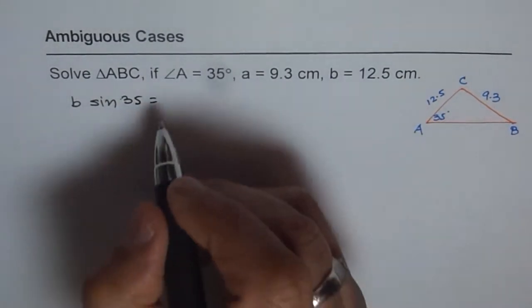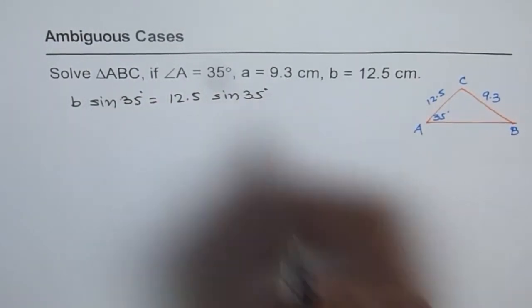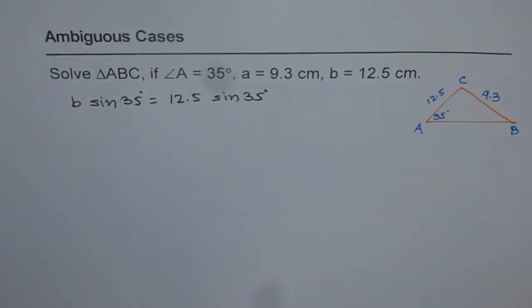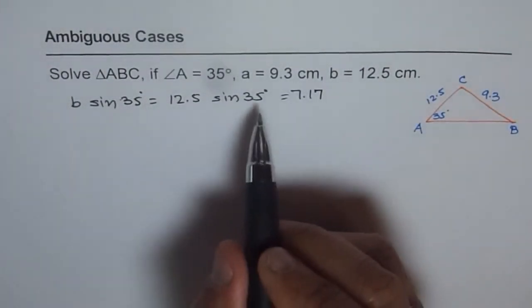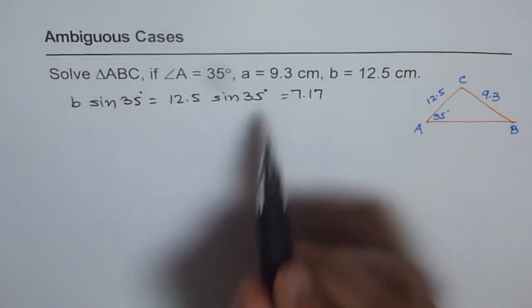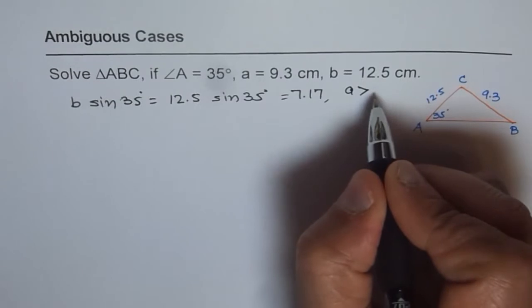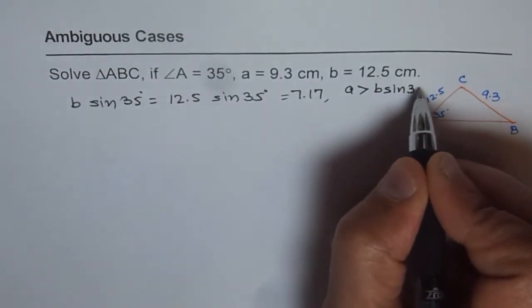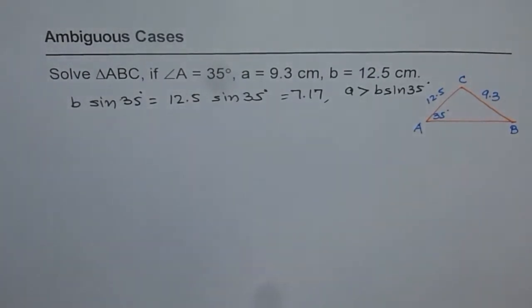B is 12.5, so we get 12.5 times sine of 35 degrees. Calculating this: 12.5 times sine of 35 gives us 7.169, so it is equal to 7.17. Now B·sin(35°) is 7.17 and A is 9.3, so A is greater than 7.17. We have A greater than B·sin(35°), and in that condition we get two triangles — it is a case of two triangles.